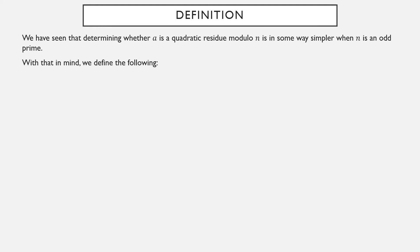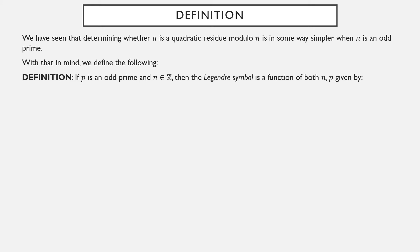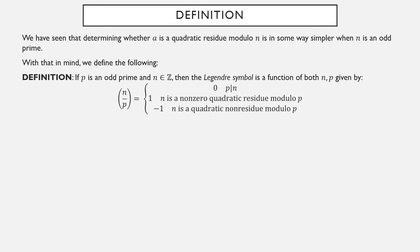With that in mind, we're going to define the following construction. If p is an odd prime and n is any integer, the Legendre symbol is a function of both the integer and the odd prime. If p is a factor of n — in other words if n is equivalent to zero modulo p — the Legendre symbol is zero. If n is not equivalent to zero but is a quadratic residue mod p, it spits out one. And if n is a quadratic non-residue modulo p, it spits out minus one.